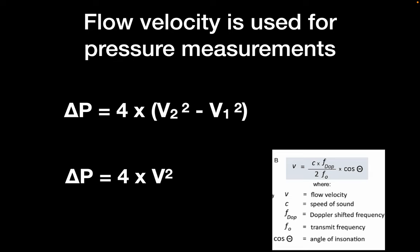Rearranging the equation to obtain velocity measurement, we use this velocity to determine pressure gradients inside the heart or inside blood vessels. This is the modified Bernoulli equation, which I'll cover in later lectures. For now, it's enough that we're using flow and velocity measurements to infer pressures and pressure gradients inside the heart.